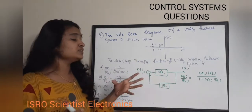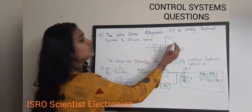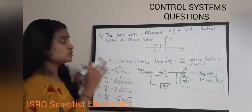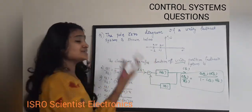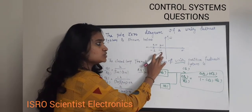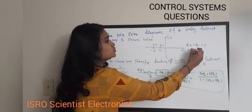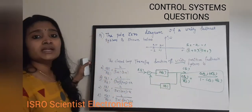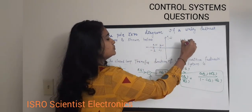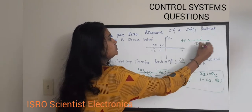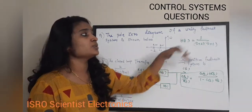We are not given G(s) or H(s) directly, but we have the pole-zero plot. From this plot, the poles are at s = -2 and s = -1, so the factors are (s+2) and (s+1) in the denominator of H(s). Since there are no zeros, we write H(s) = 1 / [(s+2)(s+1)].